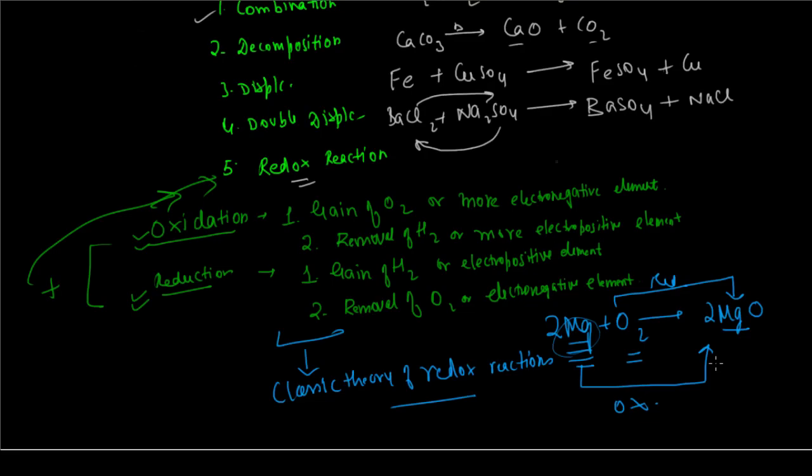For this very purpose, we came up with the concept of oxidation number. I will discuss oxidation number in the next class or next video. For now, try to understand what we mean by a redox reaction as per the classical theory: oxidation is the gain of oxygen or more electronegative element, or removal of hydrogen or more electropositive element; reduction is the gain of hydrogen or electropositive element, or removal of oxygen or electronegative element.